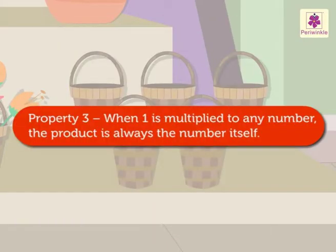Property three: When one is multiplied to any number, the product is always the number itself.